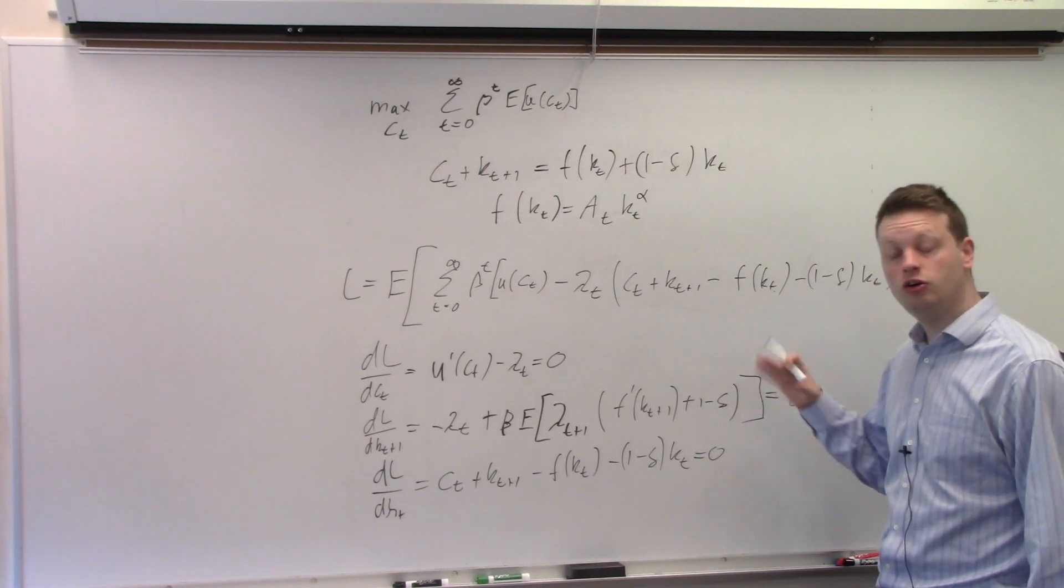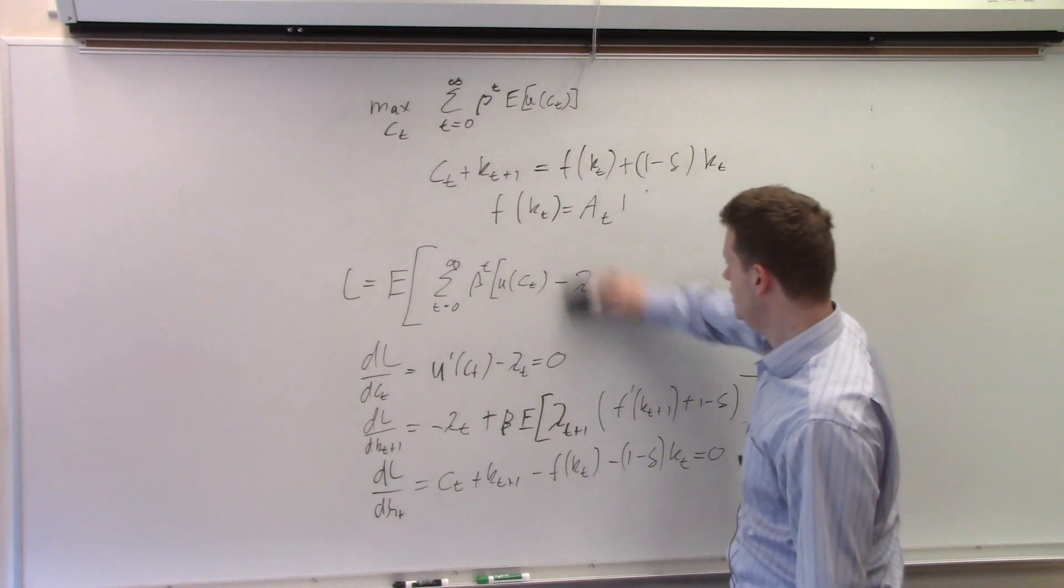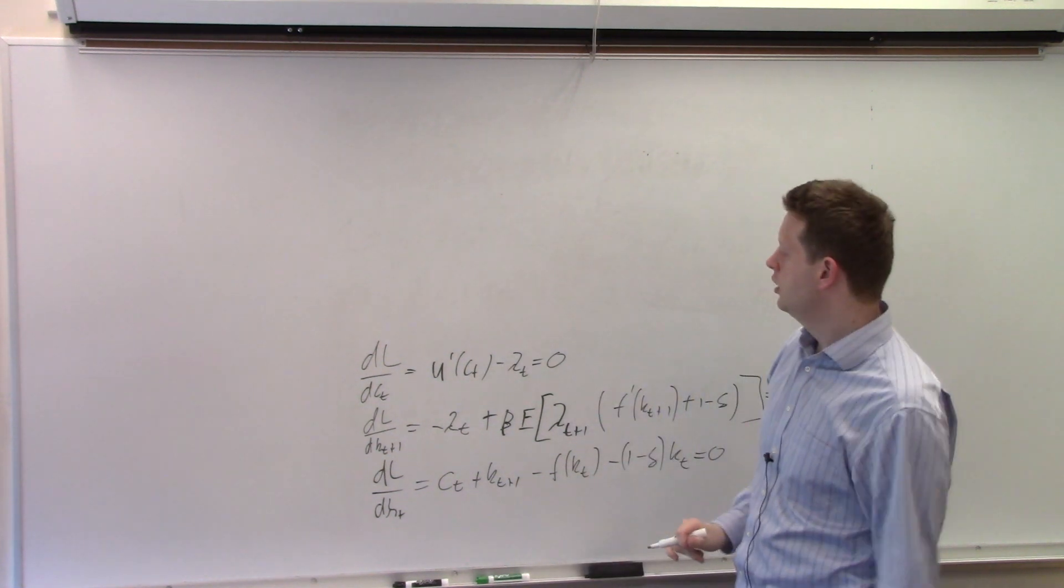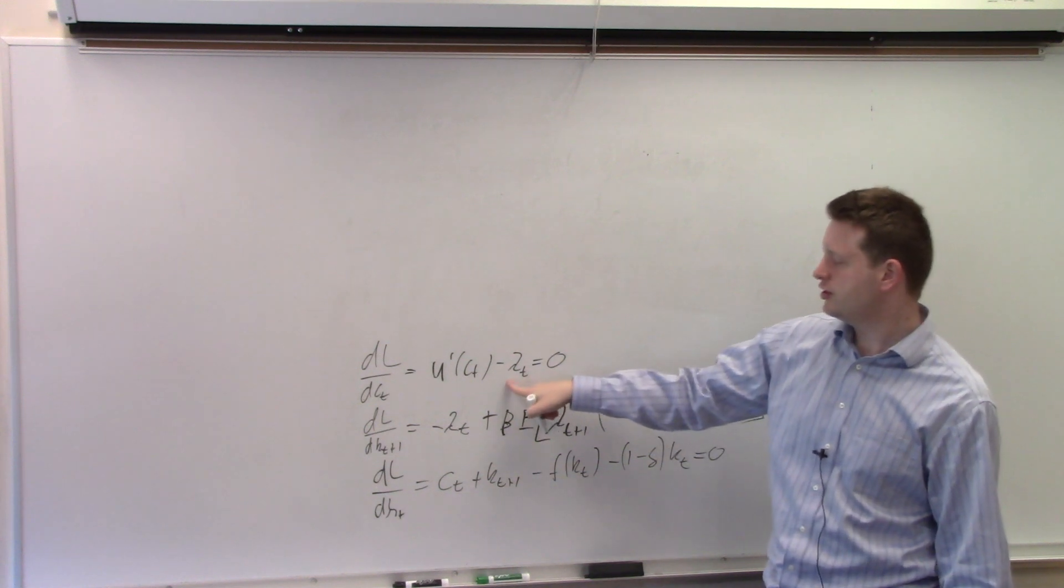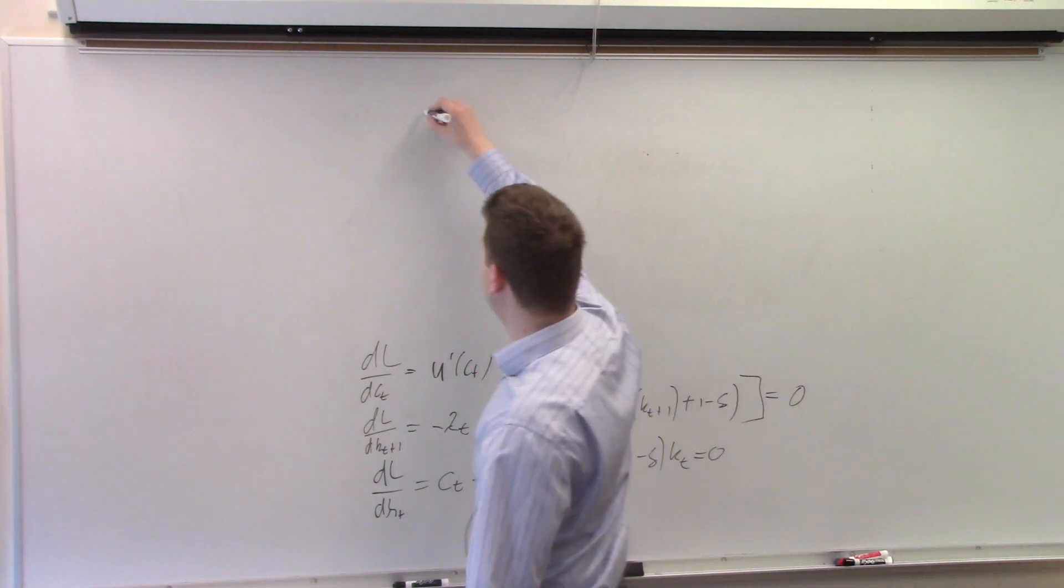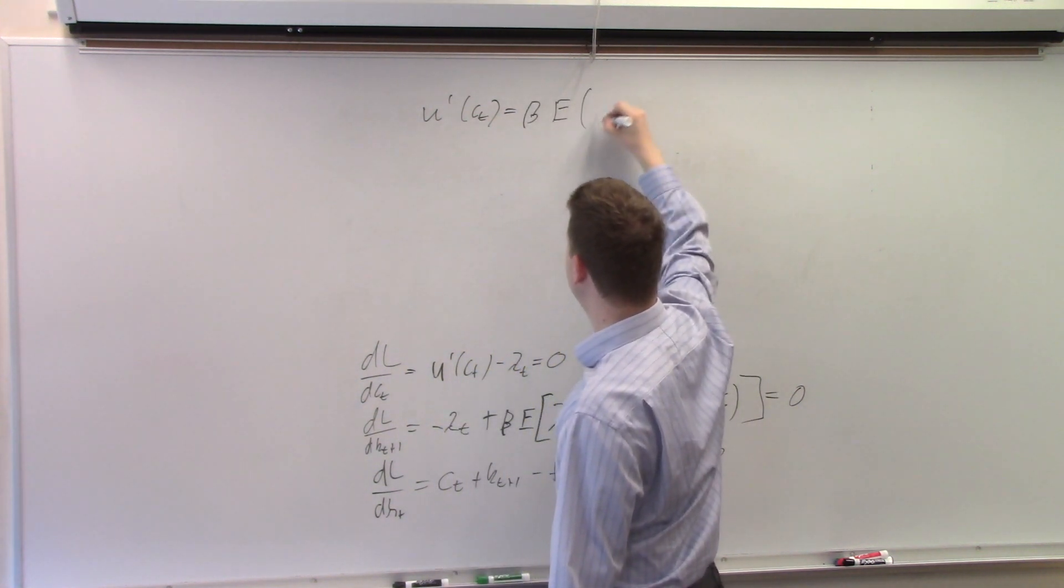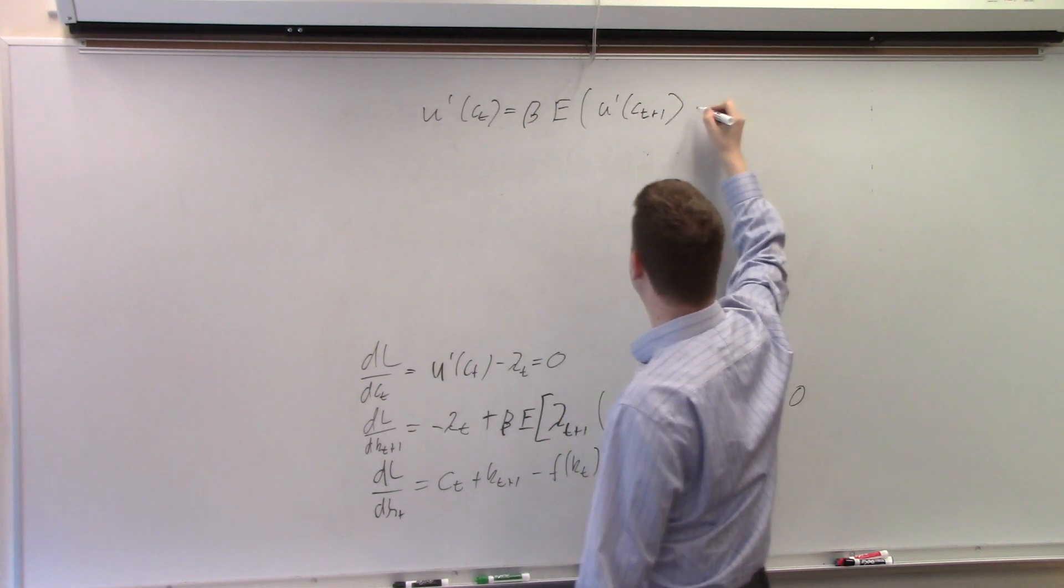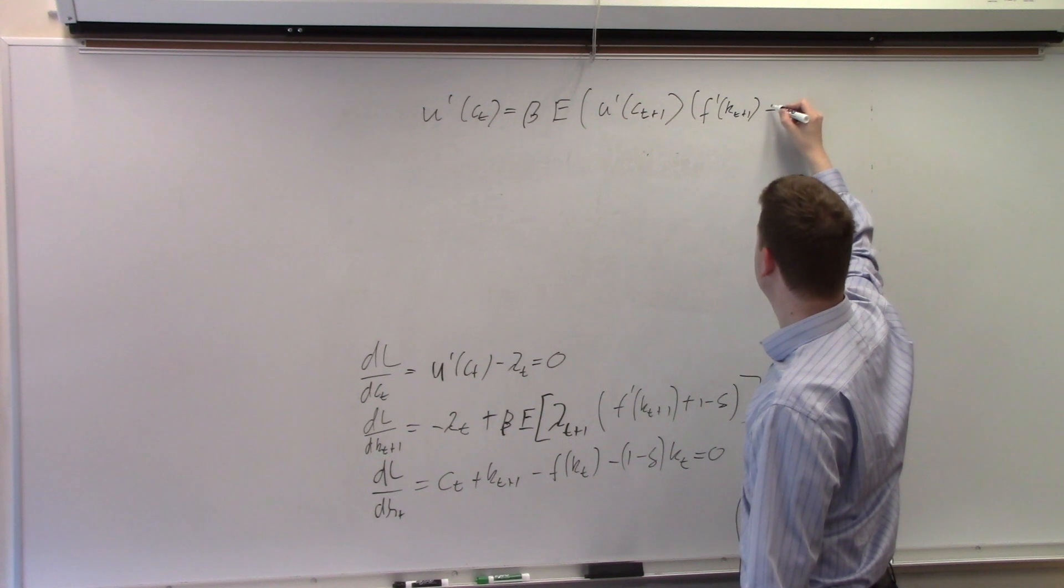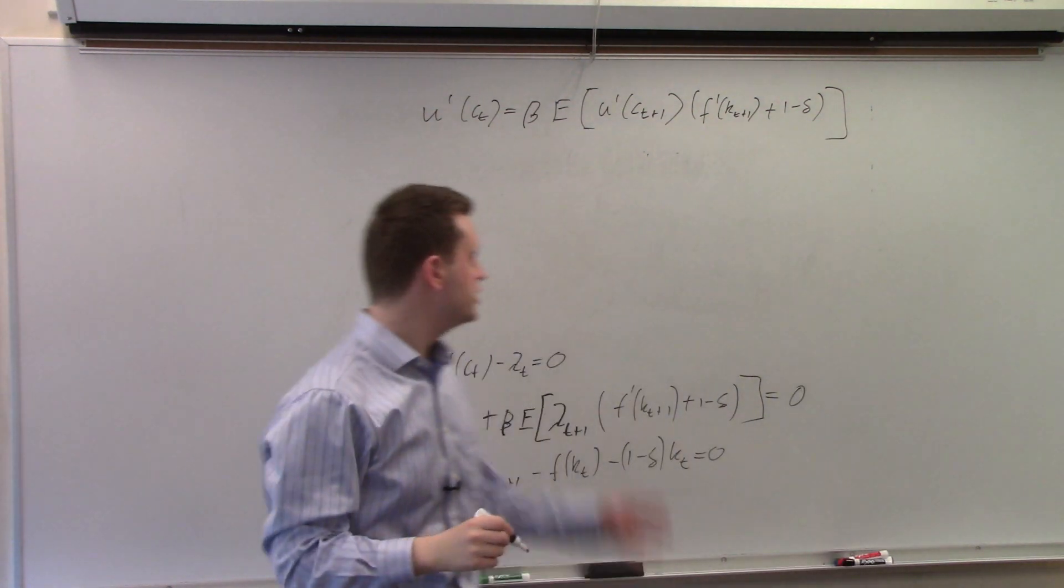Okay, we have three equations. Let's now get the Euler equation from these three. First, I'll erase, make some space. Okay. Now let's start with combining these two because everywhere where there's lambda_t and t+1, I can replace it by u prime of c_t. So I get u prime of c_t is equal to beta times the expectation of u prime of c_{t+1} times f prime of k_{t+1} plus (1 minus delta). And we have big bracket here. And this is our standard Euler equation.